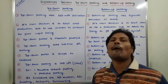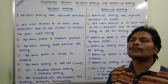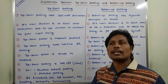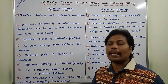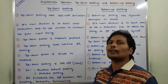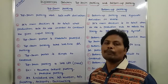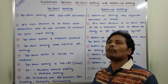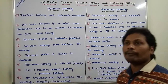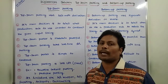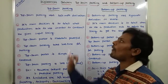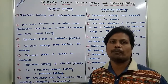The limitations of top-down parsing: whenever the given grammar contains left recursion, left factoring, backtracking, and ambiguity, it is somewhat difficult to construct a top-down parser. First, we have to eliminate the left recursion, left factoring, and ambiguity while constructing the top-down parser.